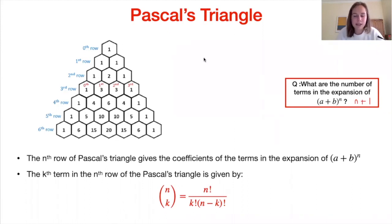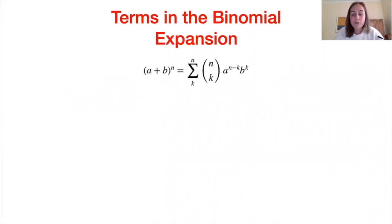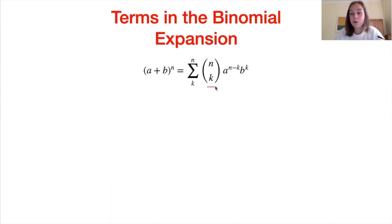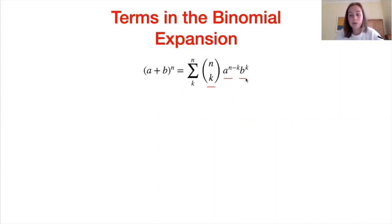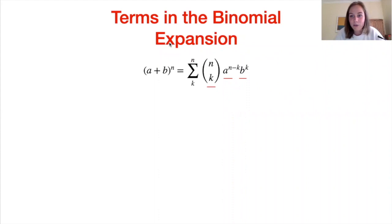Having looked at Pascal's triangle and the formula for each term in it, let's write down a general formula for the expansion of (a+b)^n. The kth term of the nth row is given by n choose k, and that is the coefficient of the a^(n−k) · b^k term. So we have decreasing powers of a and increasing powers of b. We could equally write b^(n−k) · a^k — it doesn't matter which way around.